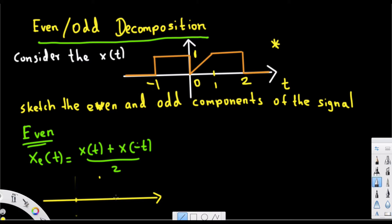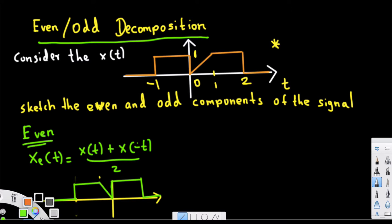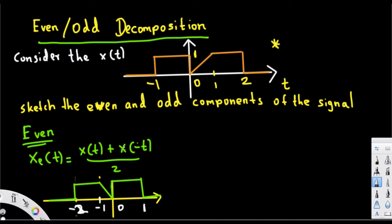The original graph starts from 2, so when we flip it, it's going to go to negative two. We are going to have that at negative two, and then it goes to zero at negative one. It goes down and goes to zero, and after that it goes up to negative one, which becomes positive one. Those are the flipped values.